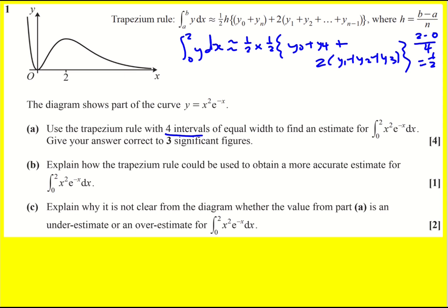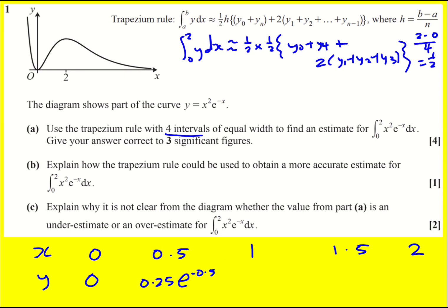Now onto finding a table. So we've got x and y. I'm going to start with zero and then go up by 0.5 each time. I decided to keep it as exact as possible, so when I put in 0.5, I squared it to give 0.25 and wrote it as e to the minus 0.5 rather than a decimal. This gives e to the minus 1, then 2.25 e to the minus 1.5, and 4 e to the minus 2.